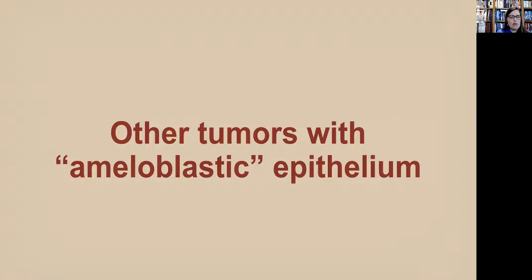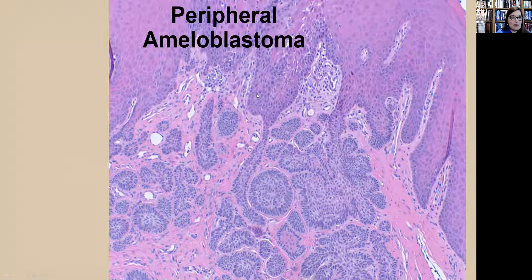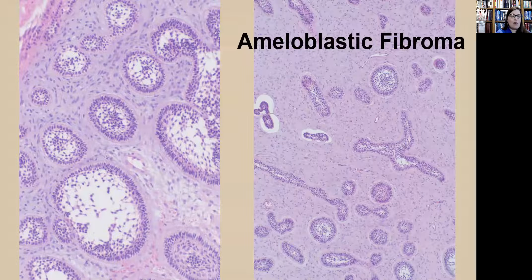We'll finish by talking about tumors with ameloblastic epithelium. In the developing tooth, ameloblasts are responsible for secretion of enamel, and next to them is the stellate reticulum — features we see in ameloblastoma but also in developing teeth. The peripheral ameloblastoma has normal surface epithelium with ameloblastic islands beneath it. The difference in treatment is that this is treated with local excision down to the periosteum with negative margins.